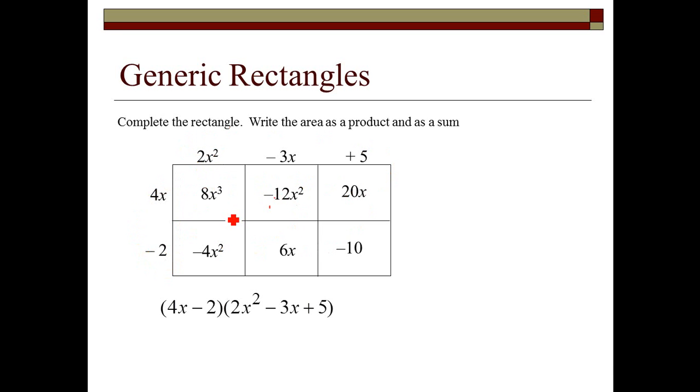And we want them to have a simplified sum, so we're going to add our like things. If you look across diagonal, these guys will combine. That gives me negative 16x squared. And then 20 plus 6x gives me 26x. So I have 8x cubed minus 16x squared plus 26x minus 10.